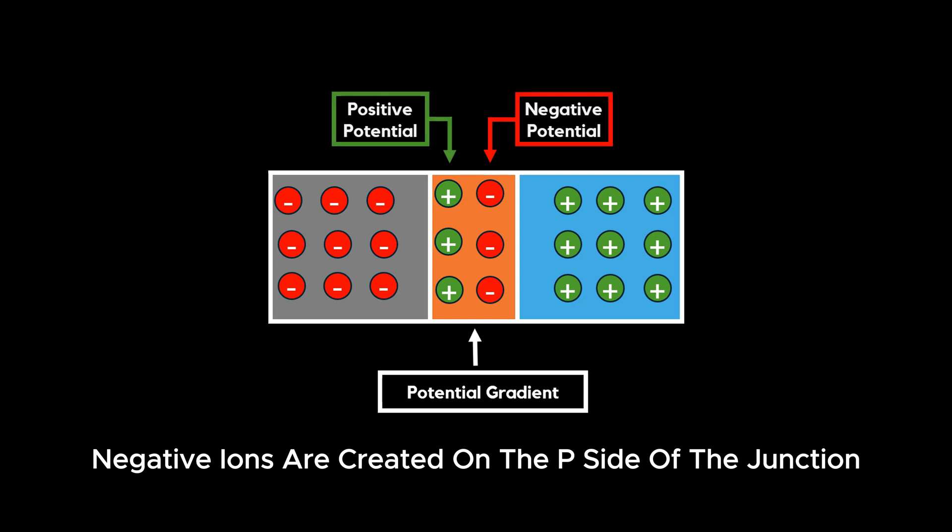Negative ions are created on the P-side of the junction, and the P-side acquires a negative potential.